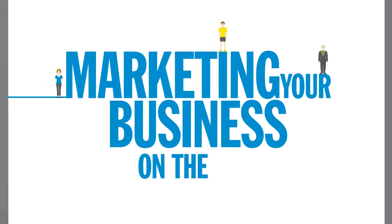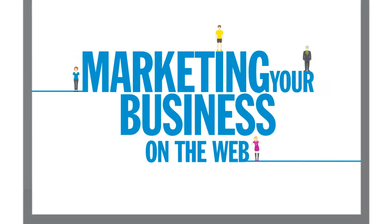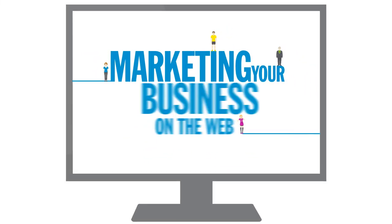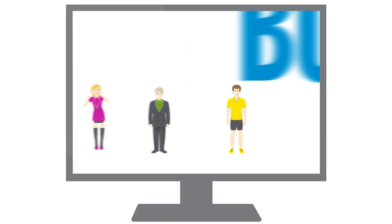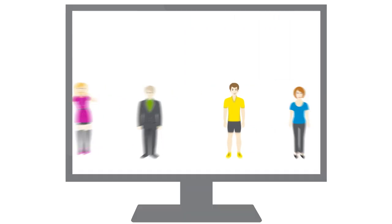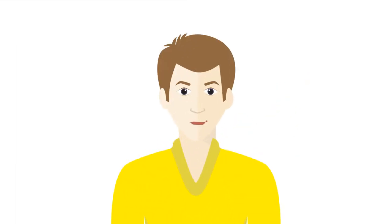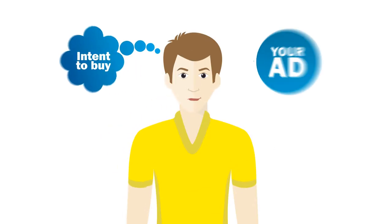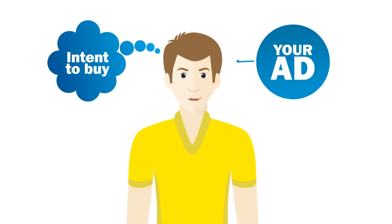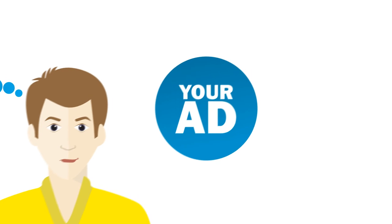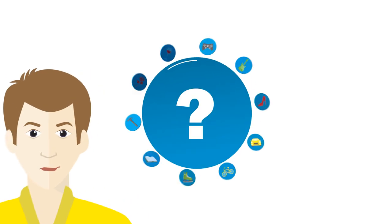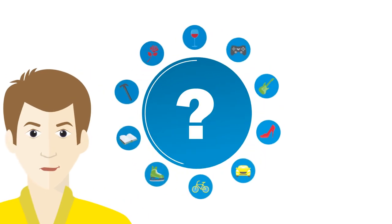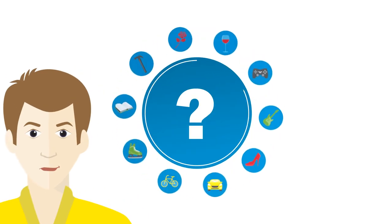Marketing your business on the web can take many forms, but the success of a marketing campaign comes down to one thing: reaching the right people at the right time. In other words, putting your ad in front of customers actively looking for the product or service you are selling is key. But how do you target web users according to their interests?